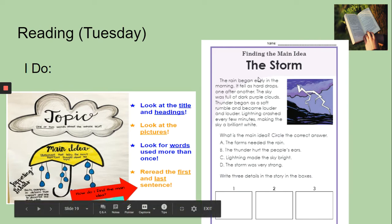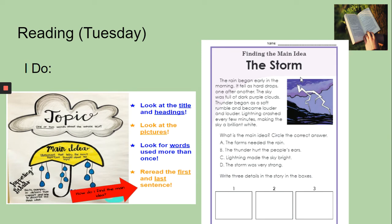The story that we're going to use today is called The Storm. This story is about a storm. As you can see in the picture, it looks like a really bad storm. You can see the lightning that is flashing brightly. You can see the dark clouds. Those details in the photograph or in the picture might help you figure out what the main idea is.